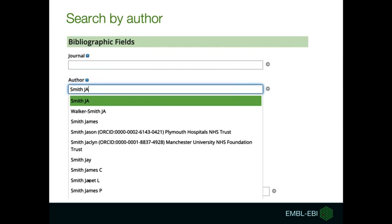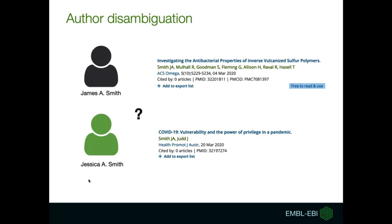You can use the author search field on the advanced search page, and it will offer you some suggestions for your search. You will realize that one common problem for any author-based search is the overlap between common names. For example, a search for 'Smith GA' will return articles where there is no quick and easy way to determine which article matches which author — one might be James and the other Jessica, but which article corresponds to each author?